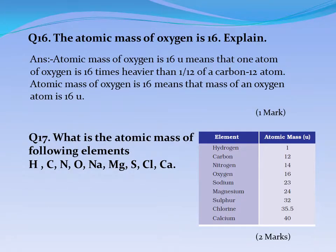Question No. 16: The atomic mass of oxygen is 16. Explain. Answer: Atomic mass of oxygen is 16U means that one atom of oxygen is 16 times heavier than one-twelfth of a carbon atom. Atomic mass of oxygen is 16 means that the mass of an oxygen atom is 16U.